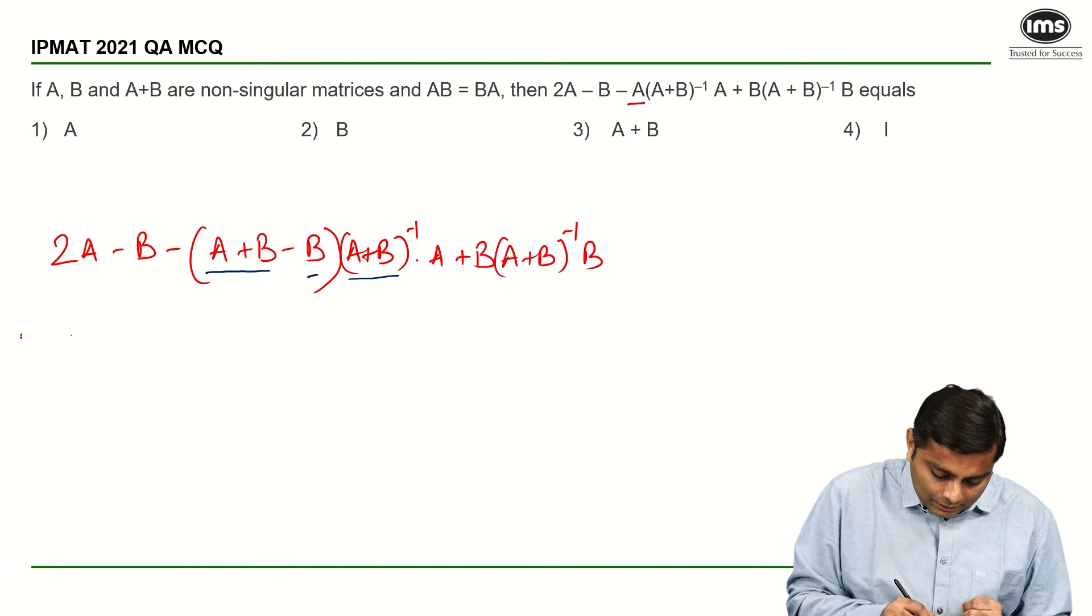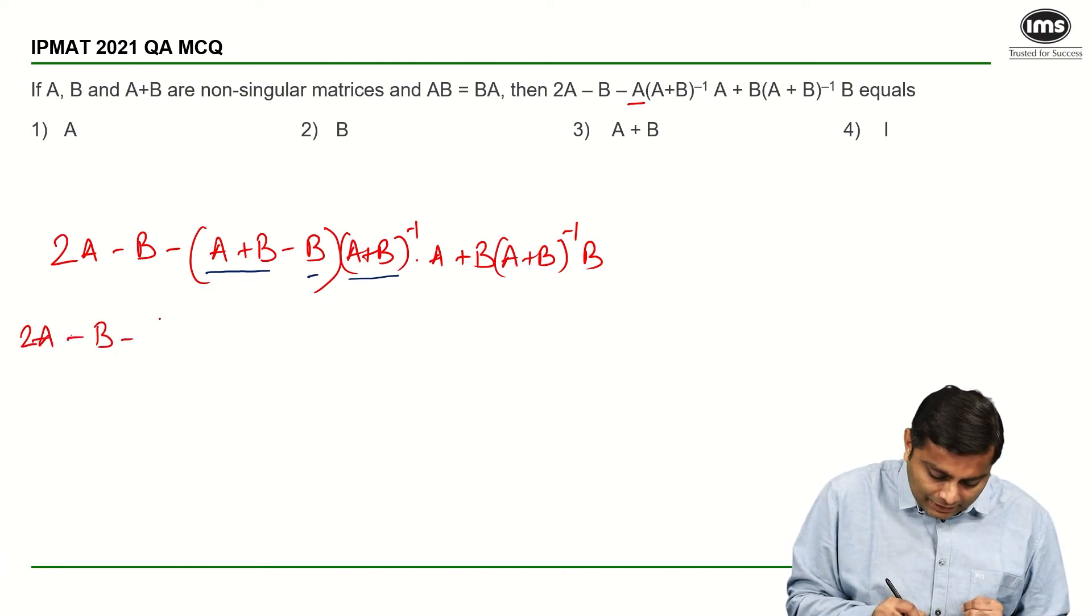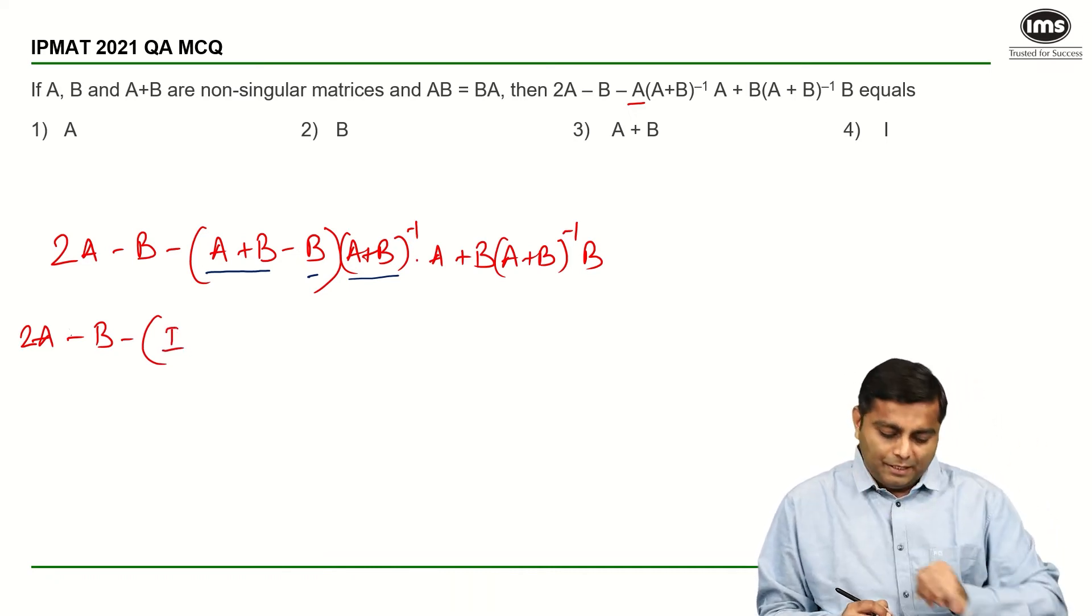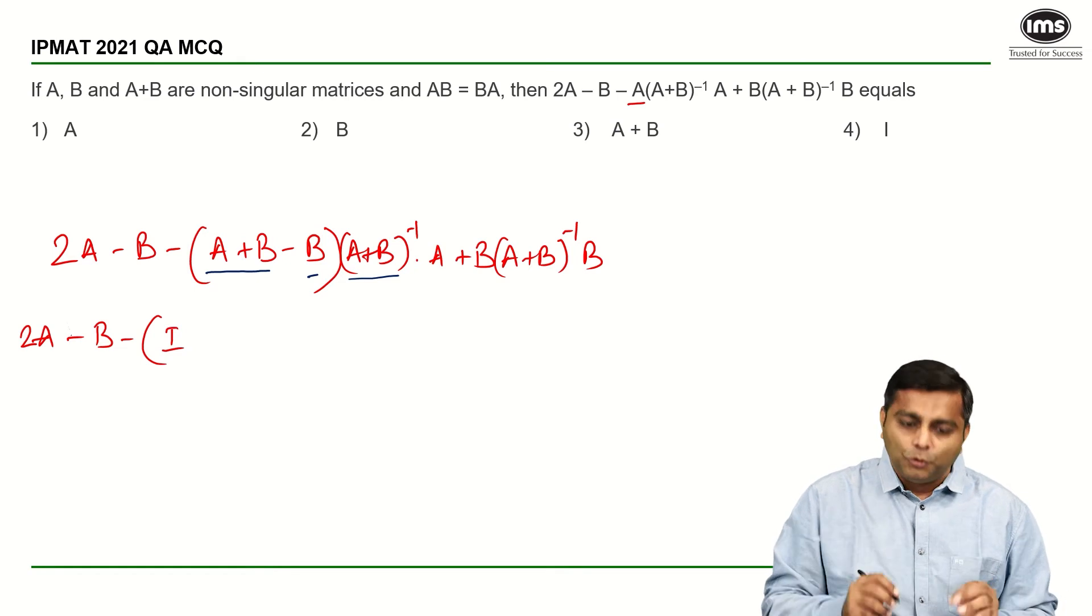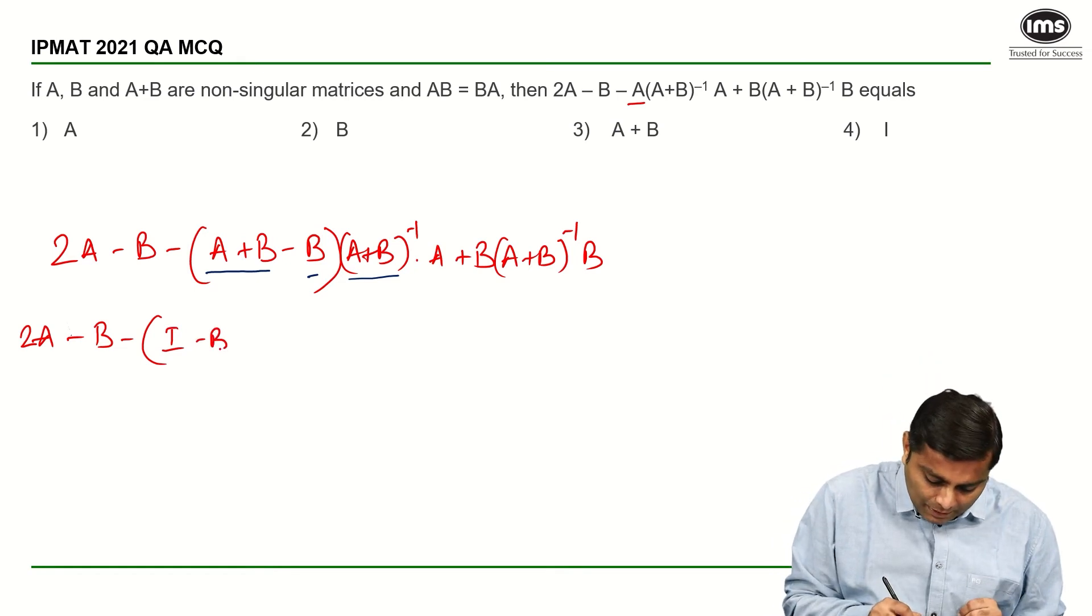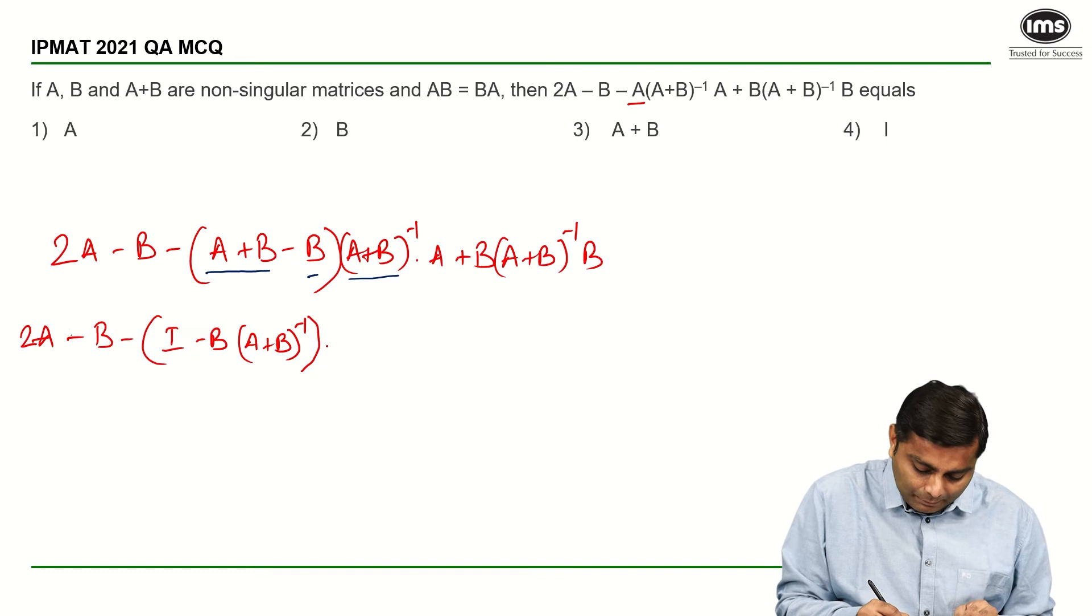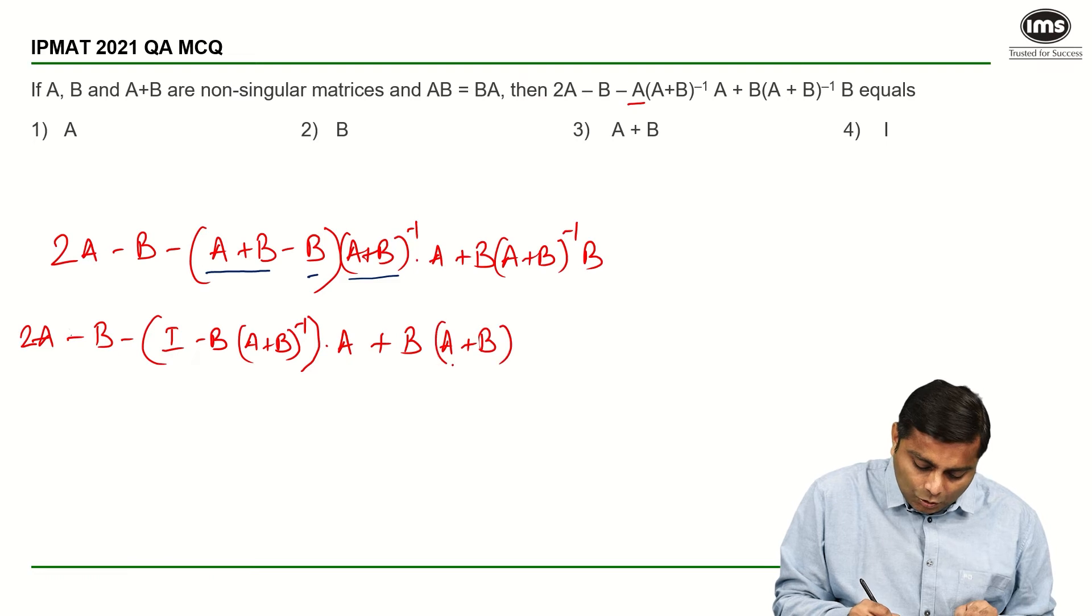We write 2A minus B minus into the bracket, I will write I for A plus B into A plus B inverse. Now, minus B into A plus B inverse, I am going to write it as it is. So, minus B into A plus B inverse is as it is. I close the bracket and I write A plus B into, I am not changing these terms anyhow. So, this is A plus B inverse into B.